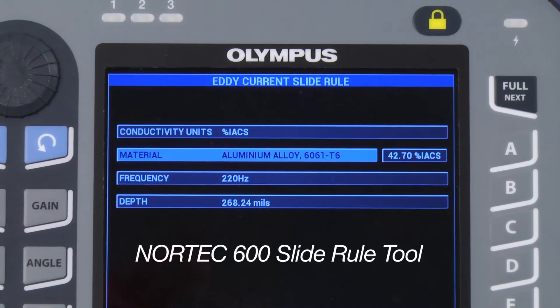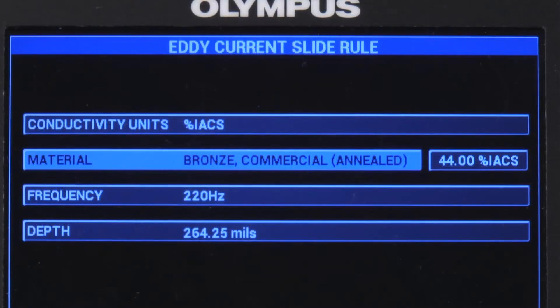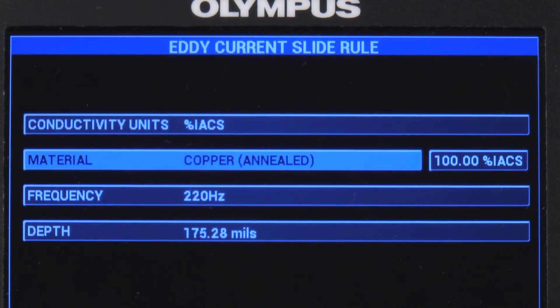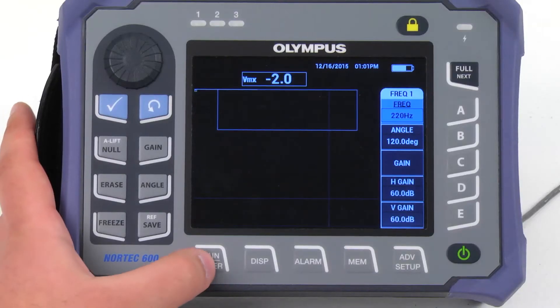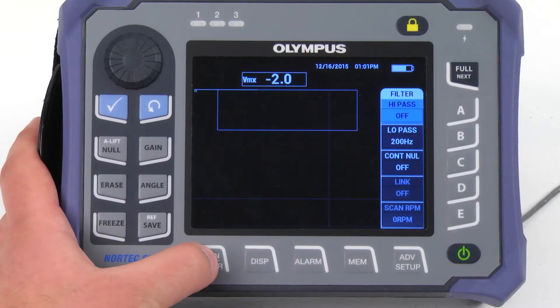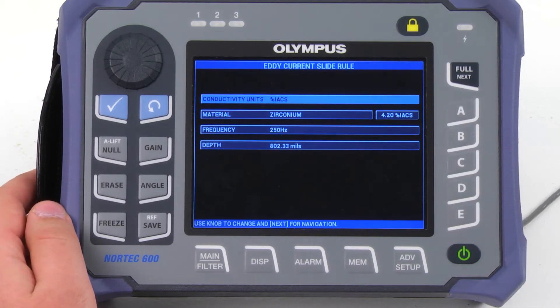The Nortec 600 includes a useful slide rule tool for determining the standard depth of penetration for a given material at a specified frequency. The user can select the material from the list and modify the frequency to determine the depth of penetration. To access the slide rule menu, press the main key until slide rule appears at the E key. Press the E key and the slide rule menu is displayed.